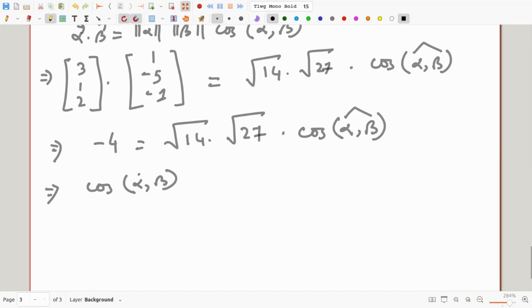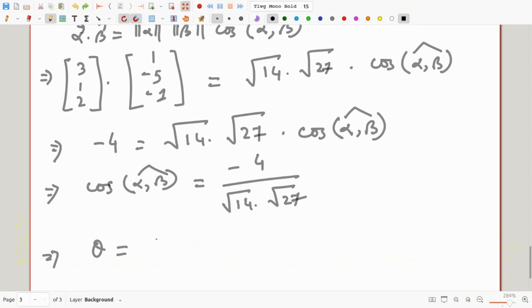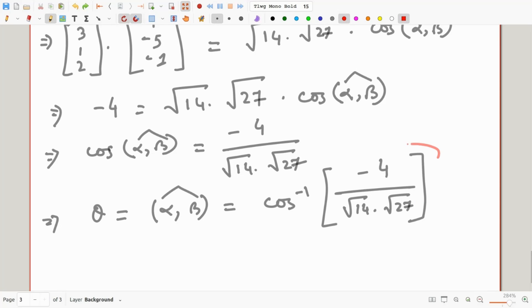Now we just need to rearrange. Cosine of the angle is going to be equal to this minus 4 divided by square root of 14 times square root of 27. This means that the angle in question is in fact going to be simply cosine inverse of this quantity. Plugging into the calculator, you can either obtain the result in radians or in degrees. But the final outcome is we get the answer that is the angle between these two vectors is this quantity.